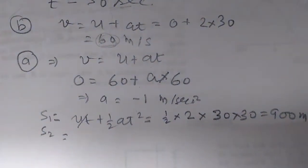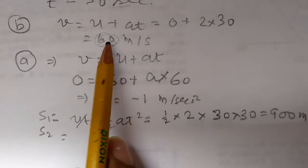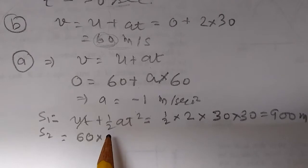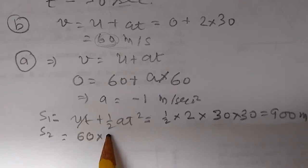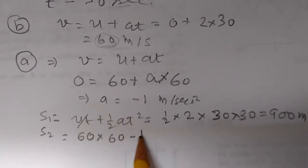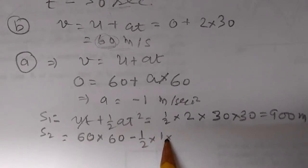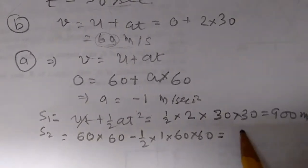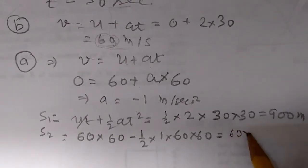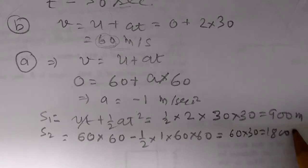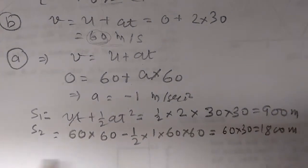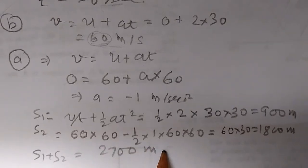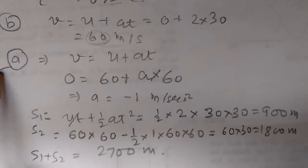For S2: at the peak, velocity was 60 meters per second. Using s equals ut plus half at squared: 60 times 60 minus half times 1 times 60 squared — that gives 60 times 60 minus 1800, which equals 1800 meters. So the total distance S1 plus S2 equals 900 plus 1800 equals 2700 meters. That is Part A.